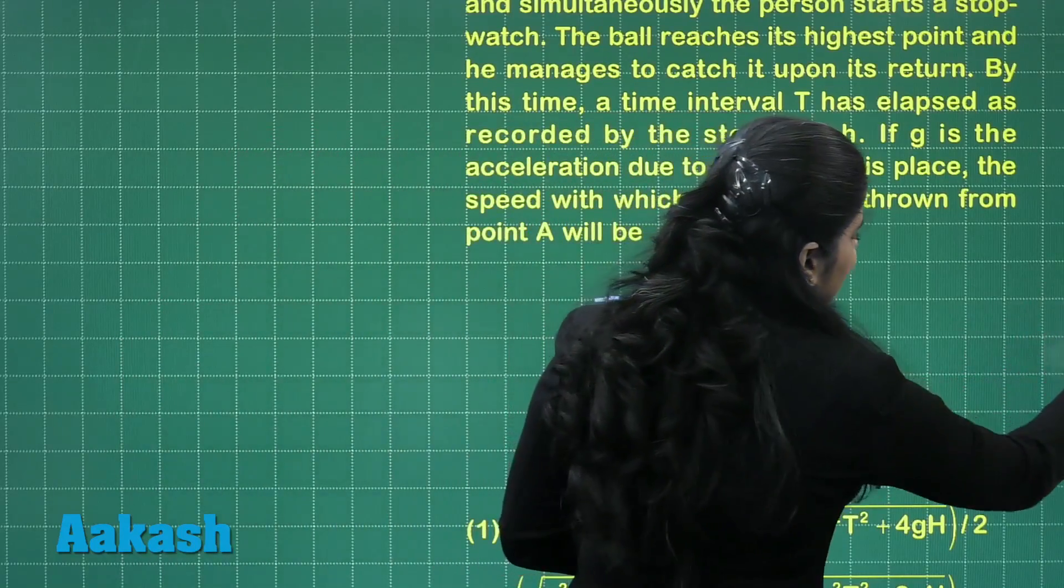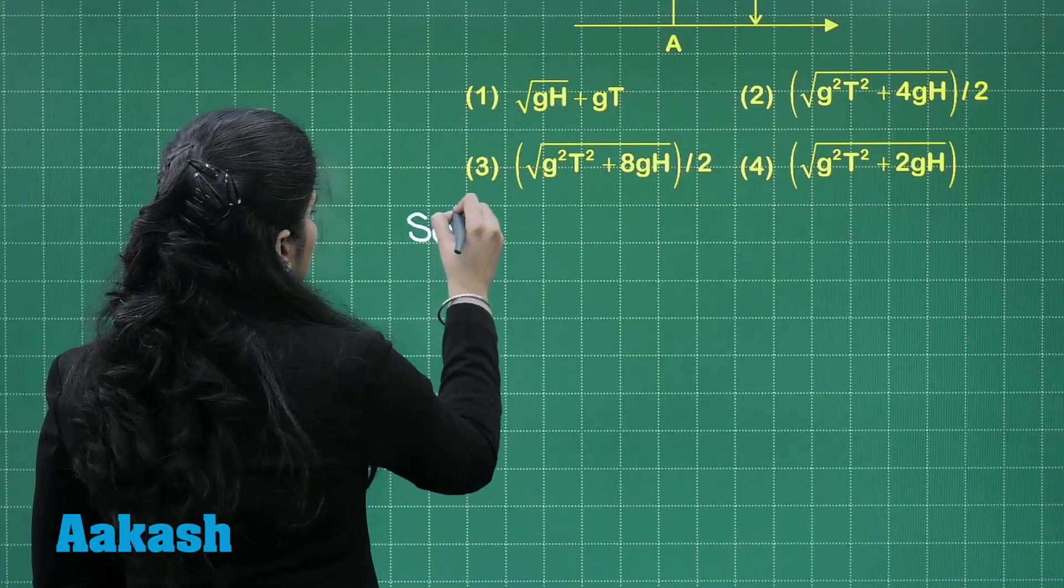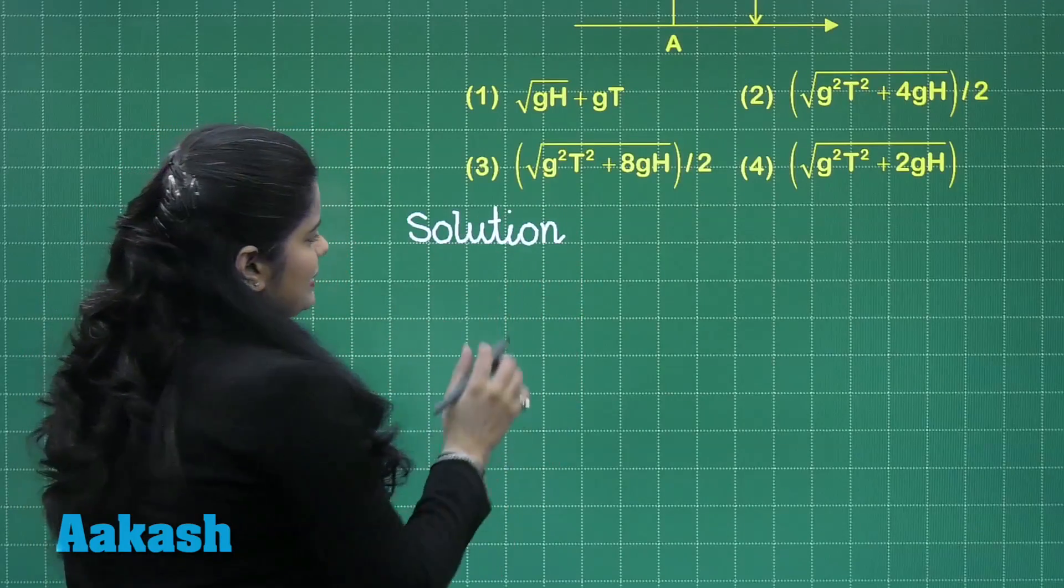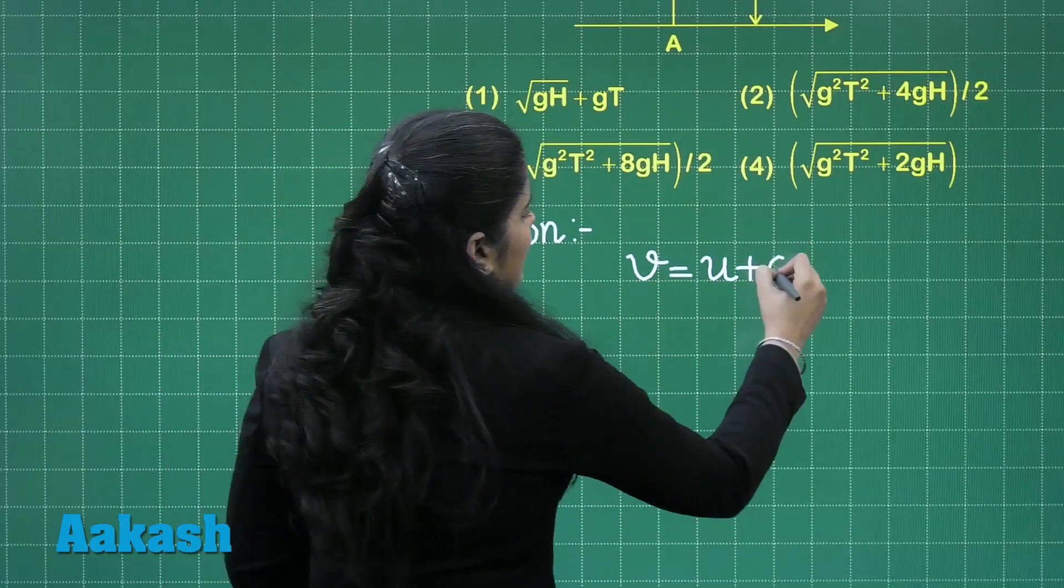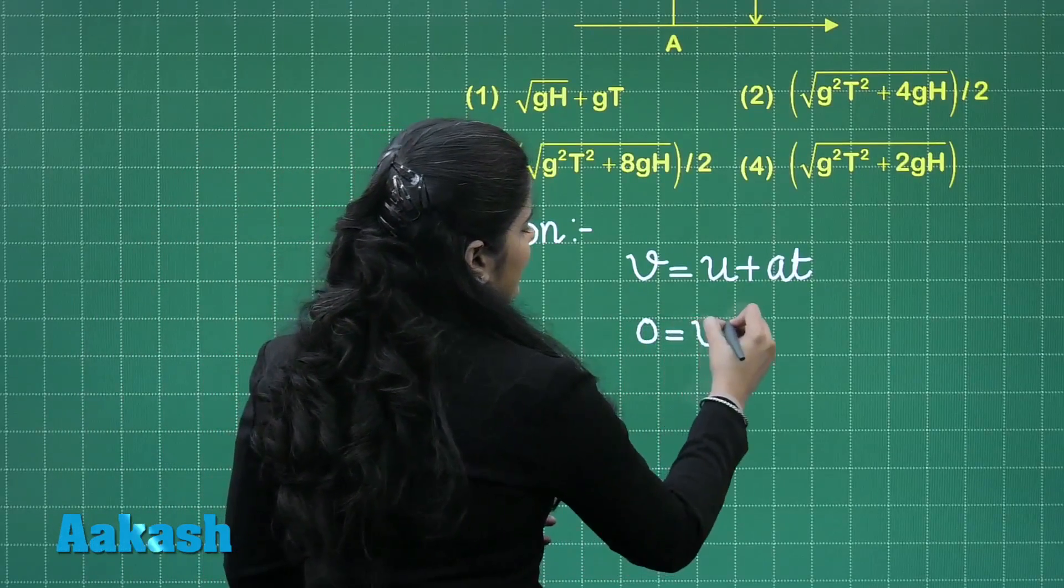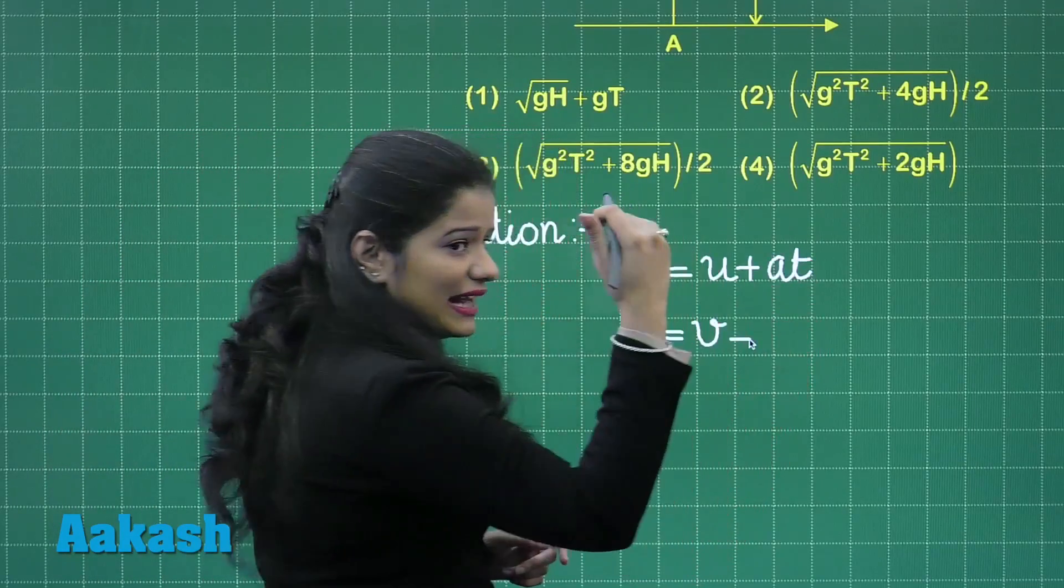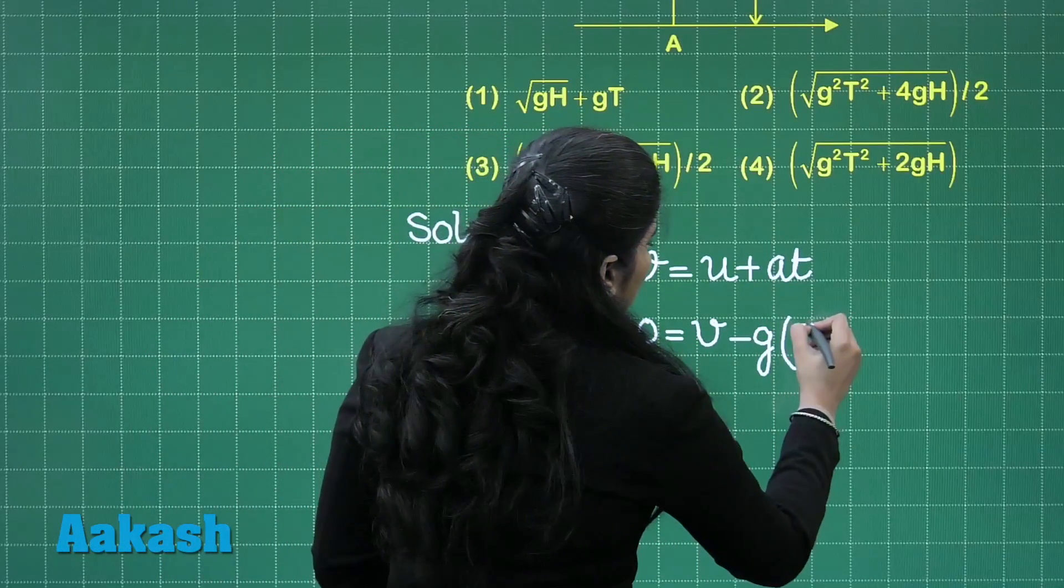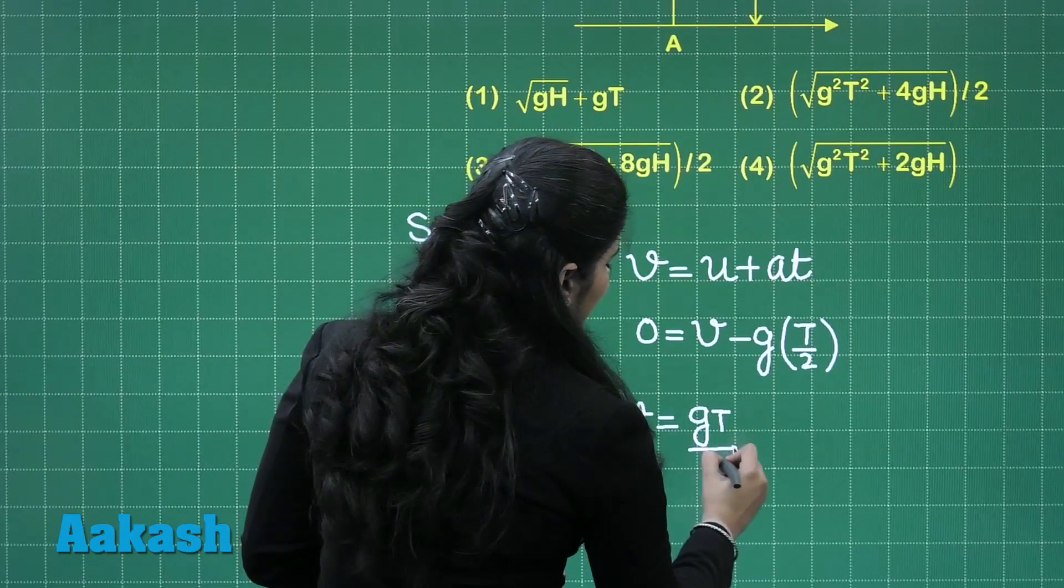Now I can apply here equation of motion. So what I can do is I can write from the very first equation that is V is equal to U plus AT. At the highest point it will be 0. The velocity at point B we are taking it as V. G is acting in the downward direction, so I will take the negative sign here. T is actually T by 2. So from this the V comes out to be GT by 2.